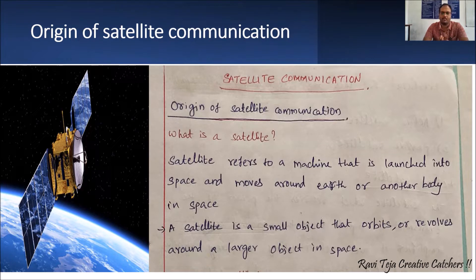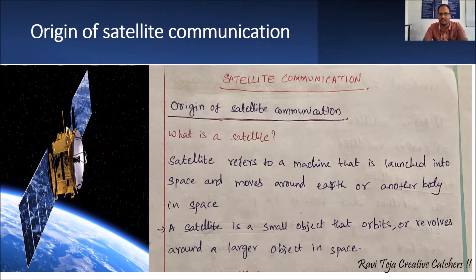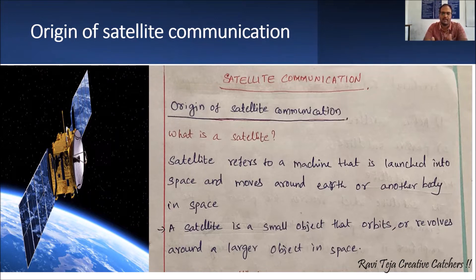We have already come across the word satellite many times. Communication throughout the world — and beyond — happens because of satellites. In a technical way, a satellite refers to a machine that is launched into space and moves around the earth or another body in space. It can be anything that is launched into space or moving in space around any object.